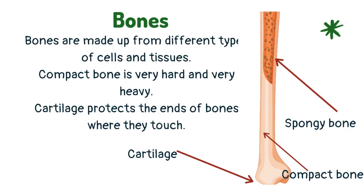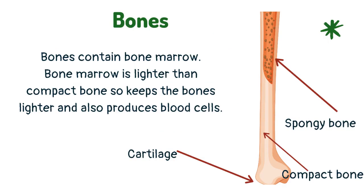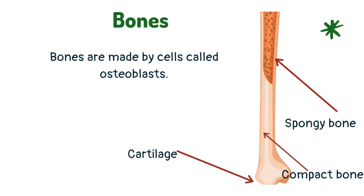Compact bone is very hard and very heavy. Cartilage protects the ends of bones where they touch. Bones contain bone marrow. Bone marrow is lighter than compact bone, so keeps the bones lighter and also produces blood cells. Bones are made by cells called osteoblasts.